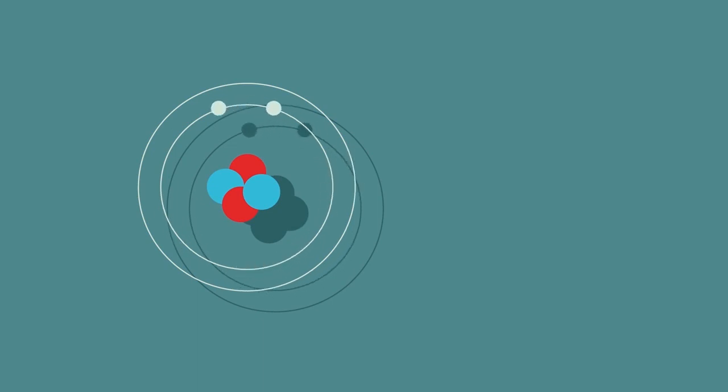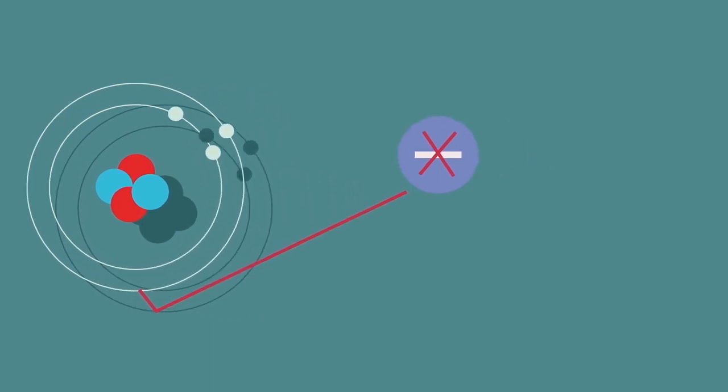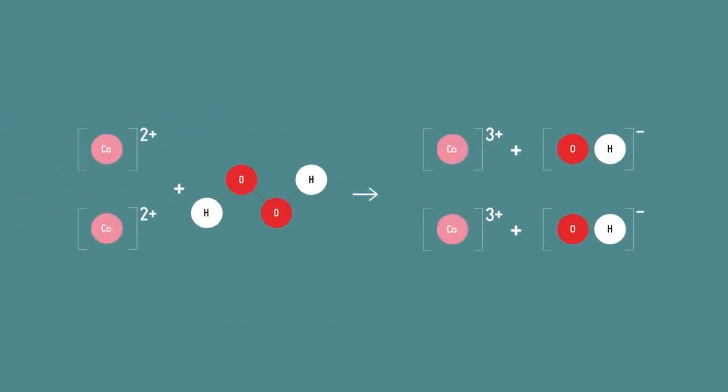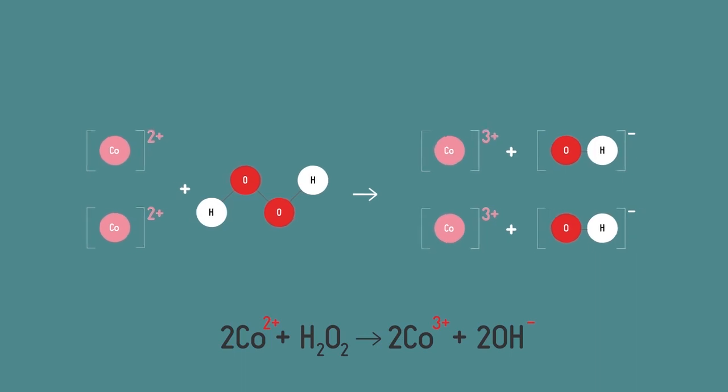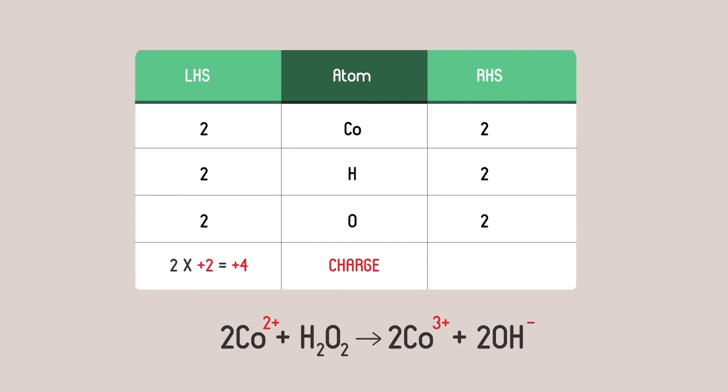The easiest way to do this is to change the number of cobalt ions on each side of the equation. We have to change them by the same amount so the atoms stay balanced, but because they have different charges, the ratio of charge on the left to the right should change.